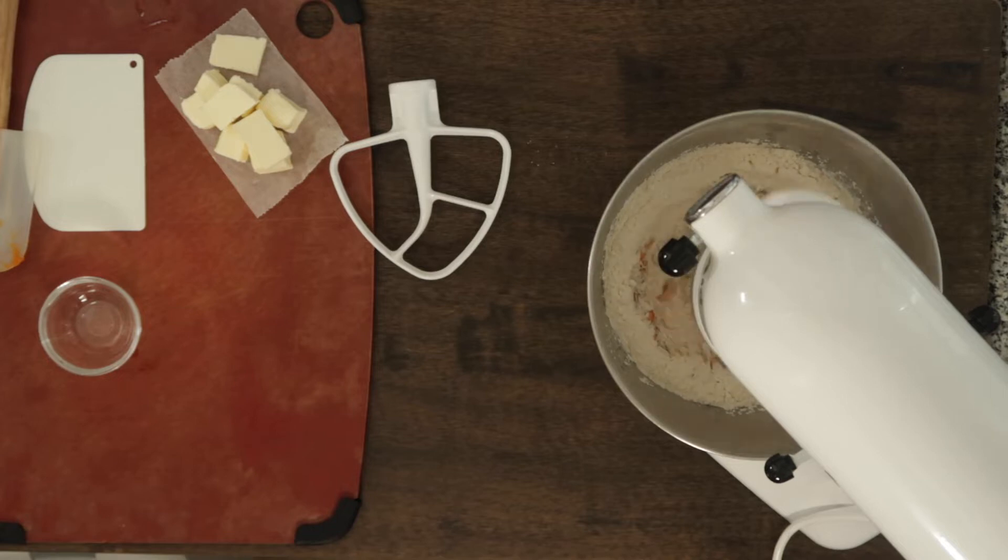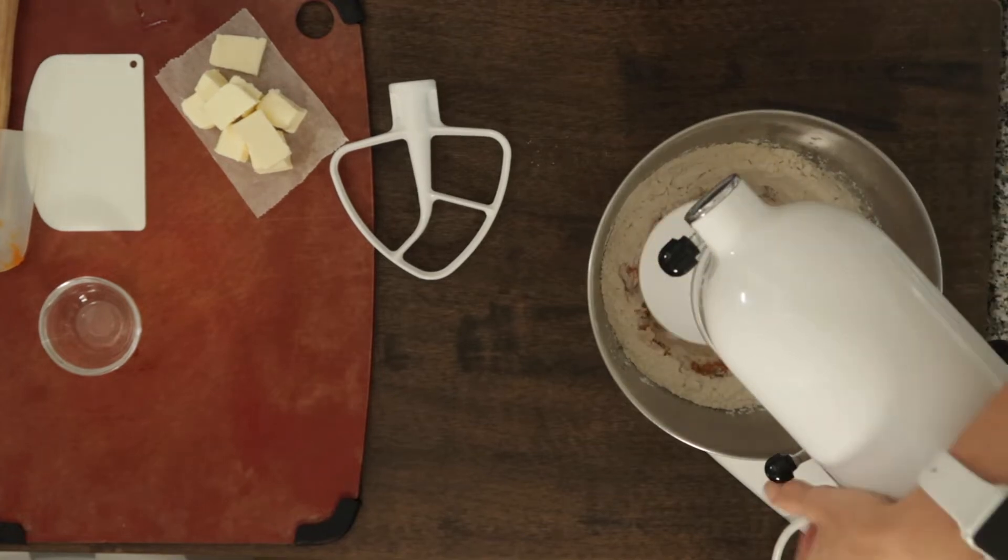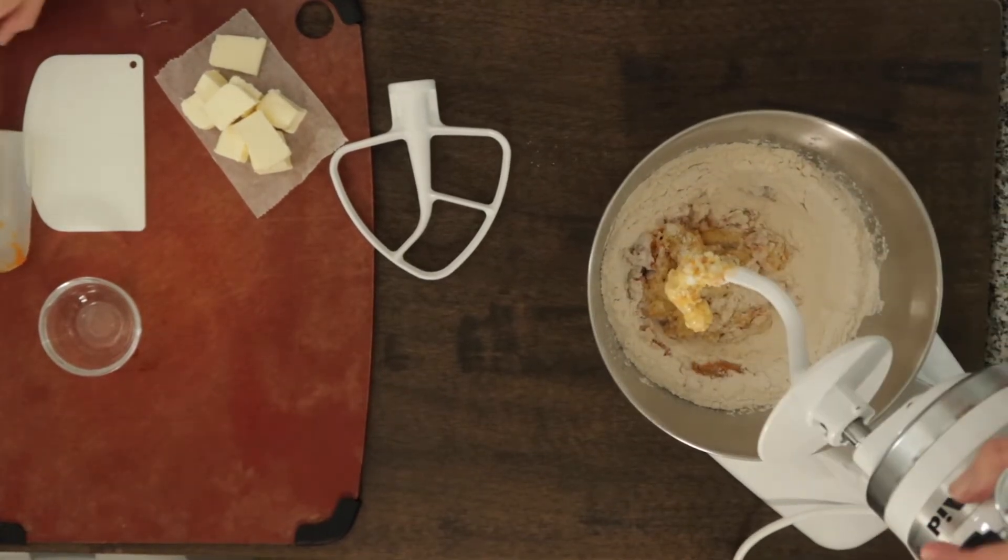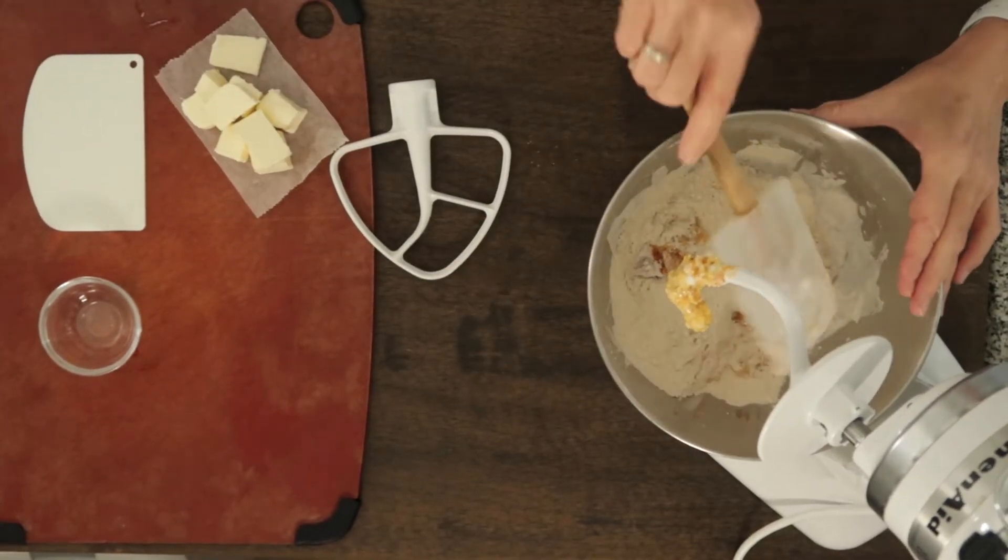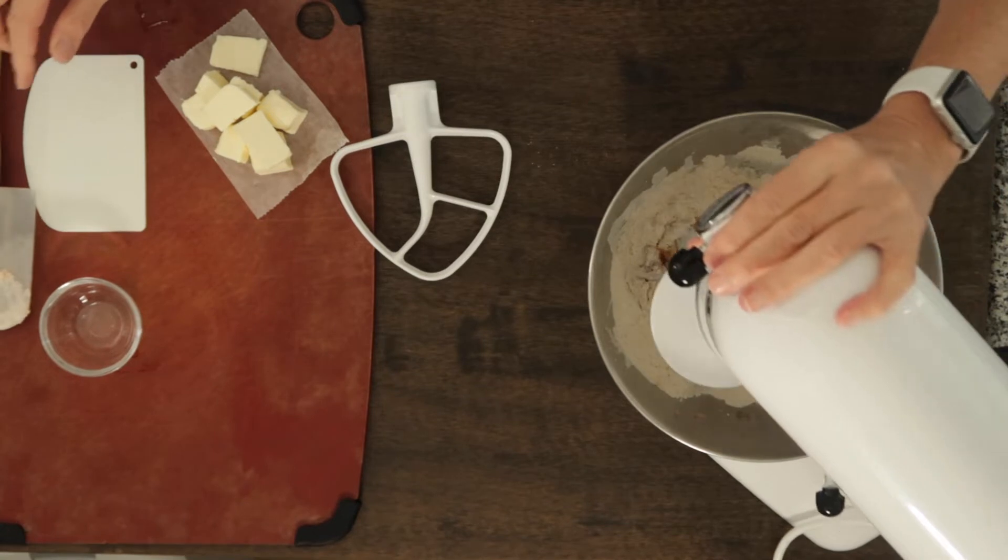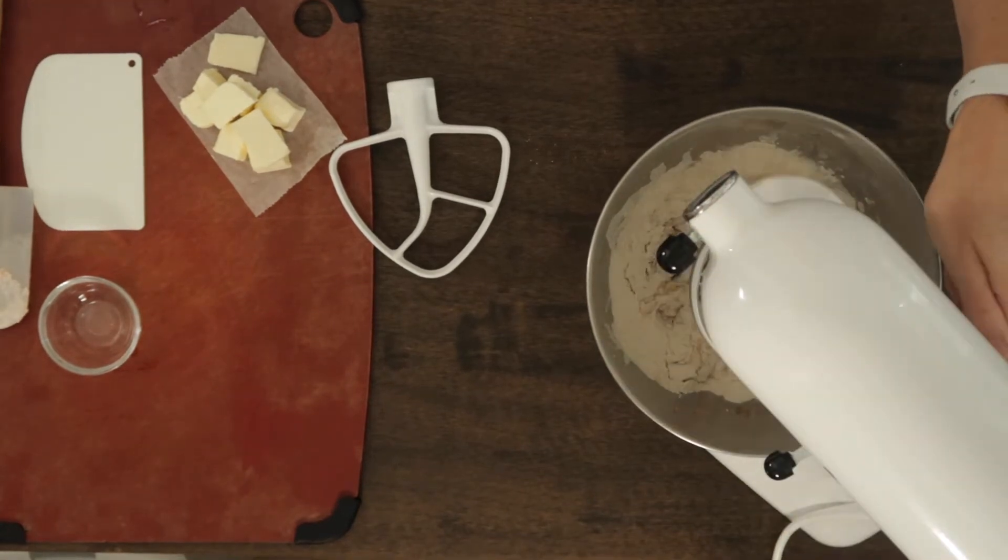Then we're going to add our softened butter. The reason we wait and develop a little bit of gluten before adding the butter is because adding the fat too early inhibits gluten formation and this can affect volume in our finished product.